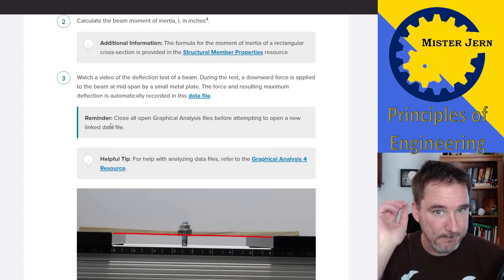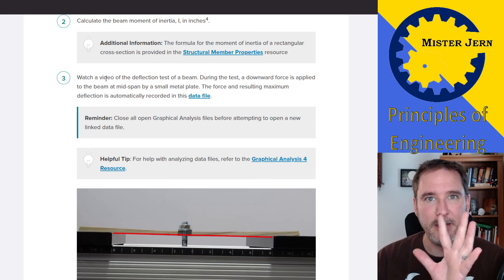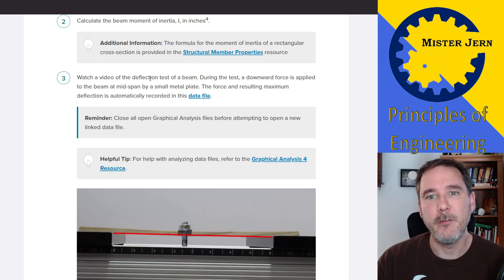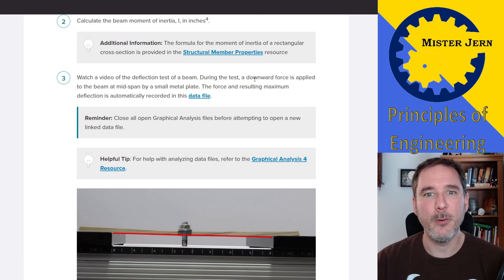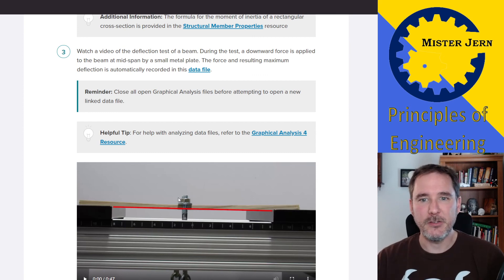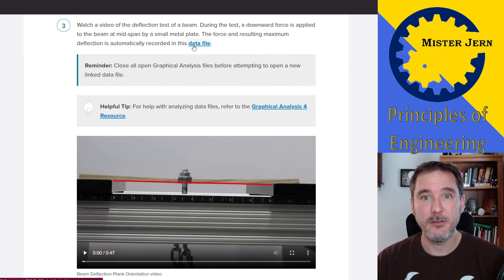Step three. Watch, you're going to watch—it's going to explain it, and then you're going to do it. So you're going to watch this video of a deflection of a beam, a deflection test. During this test, you're going to see a downward force applied to this beam at the midspan. So it's talking about this right here in this video. It's just connected by a little small metal plate and some bolts and stuff like that. You're going to see some chains pulling on it. There is a data file attached to this.